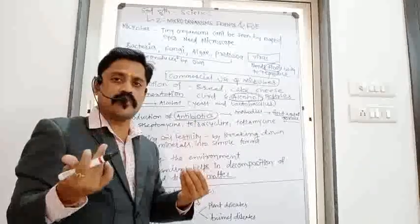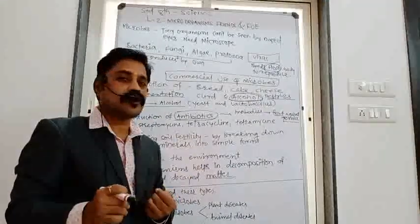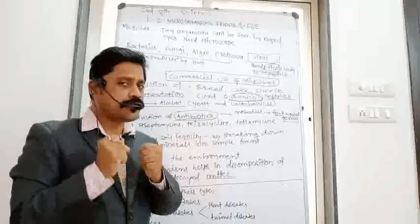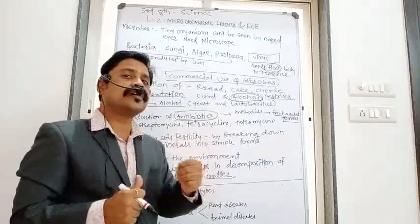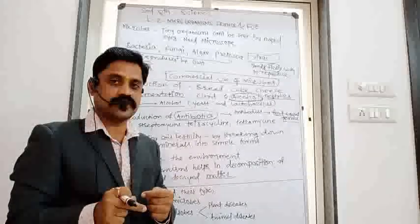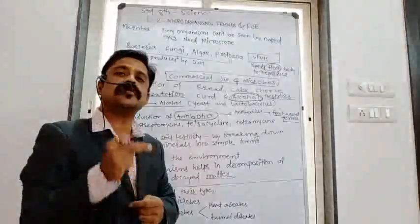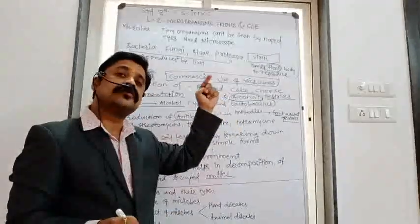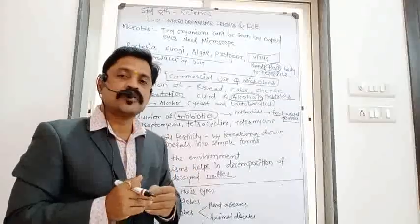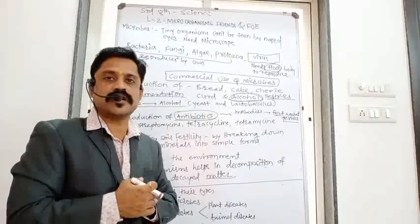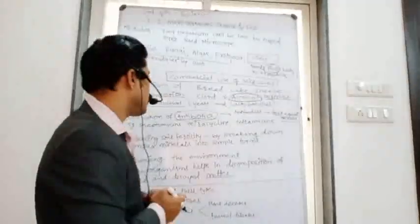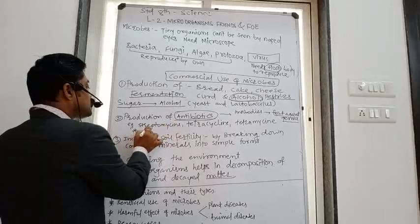When a foreign microorganism attacks, our white blood cells fight against those invader germs. But if a person's resistance power is weak, they may fall ill and be unable to do regular activities. Doctors give antibiotics to help produce antibodies that fight the germs. These antibiotics are made with the help of microorganisms — some fungi are used to make antibiotics.